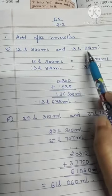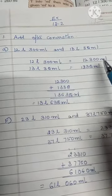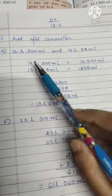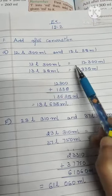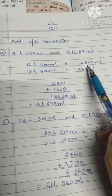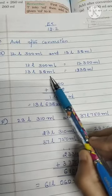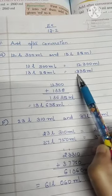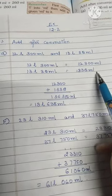First we will convert it into milliliters. So 12 liters 300 ml, you will write it together, that is 12,300 milliliters. And 13 liter 38 milliliters, you will write together, that is 1,338 milliliters.